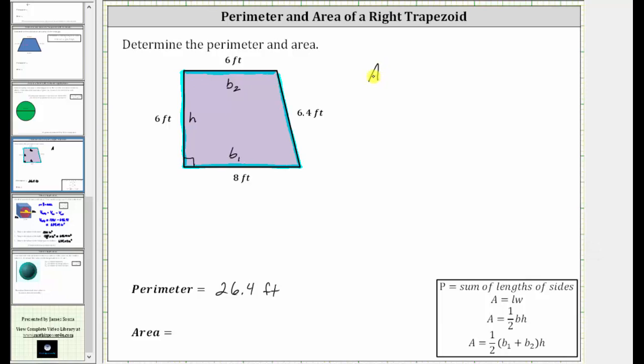So the area is equal to one-half times the sum of the two bases, which is eight feet plus six feet, times the height of six feet. And now following the order of operations, we simplify inside the parentheses first. Eight plus six is 14. The area is equal to one-half times 14 times six.